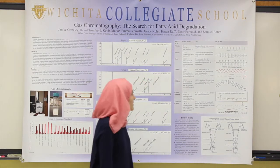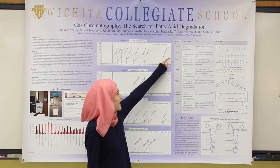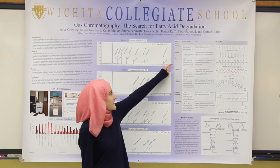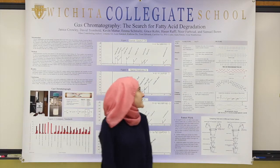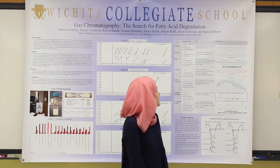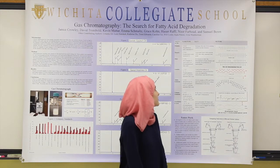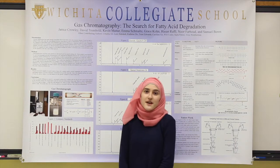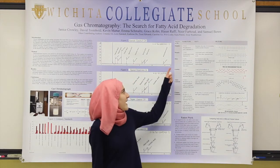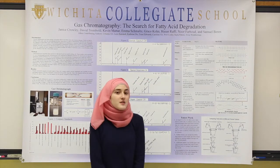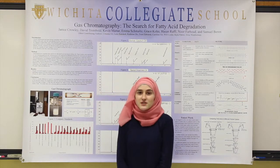For example, if you have a carbon-18 fatty acid like stearic acid versus a carbon-18 fatty acid like oleic acid, stearic acid will reach the detector first even though it has a heavier molecular weight. This is because the double bond in oleic acid attracts it to the polarized column of the GC and retains it longer, so it takes a longer time to reach the detector.